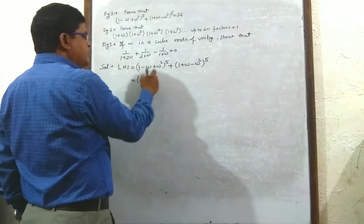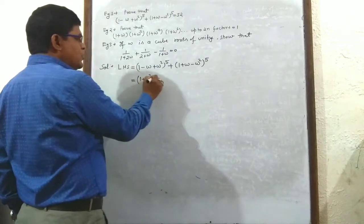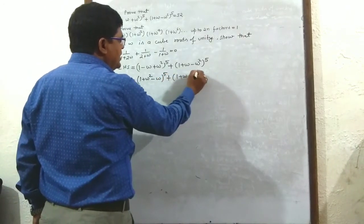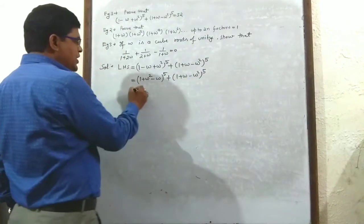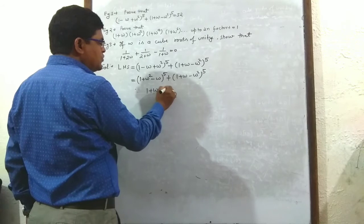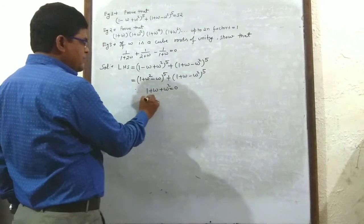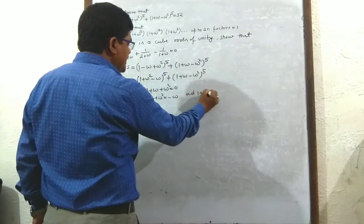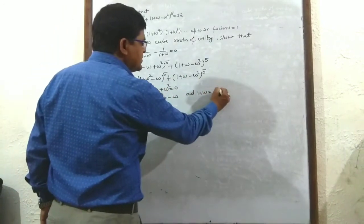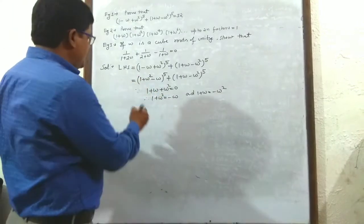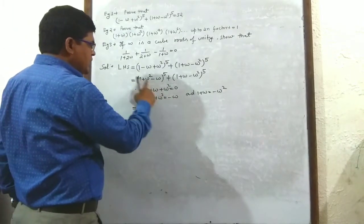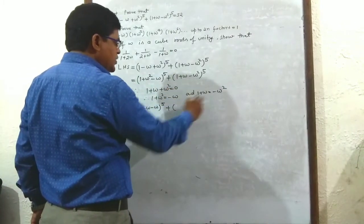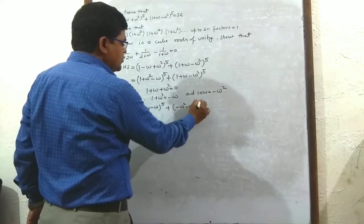Rewriting: (1 + ω² - ω)⁵ + (1 + ω - ω²)⁵. We know that 1 + ω + ω² = 0, therefore 1 + ω² = -ω and 1 + ω = -ω². Substituting: (-ω - ω)⁵ = (-2ω)⁵ and (-ω² - ω²)⁵ = (-2ω²)⁵.